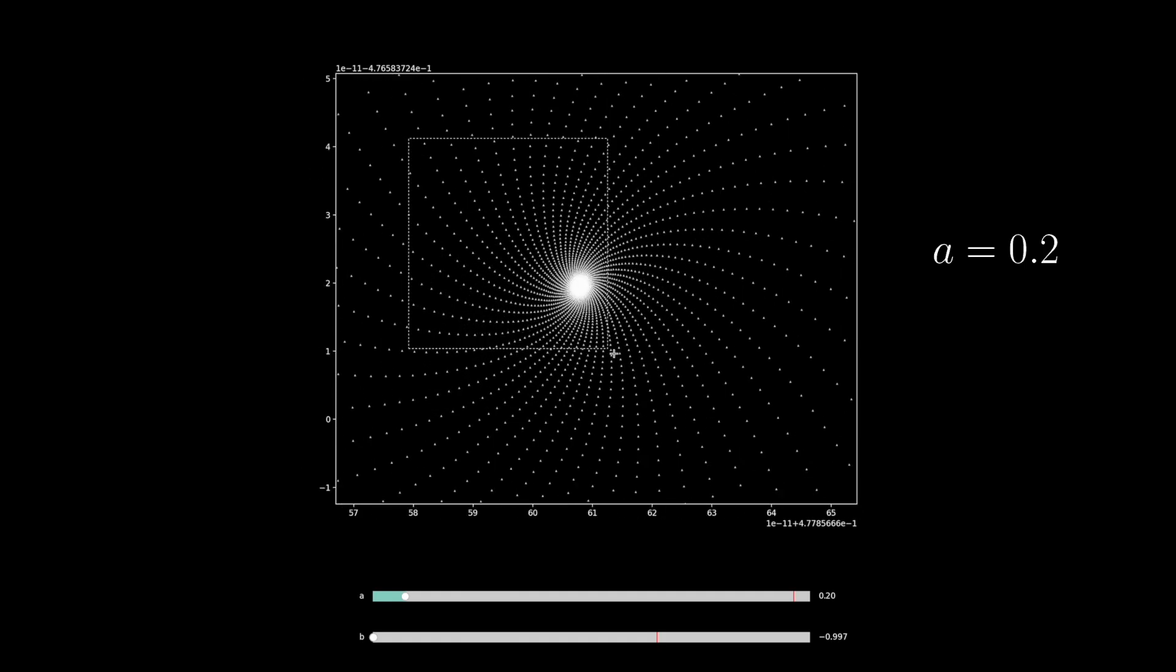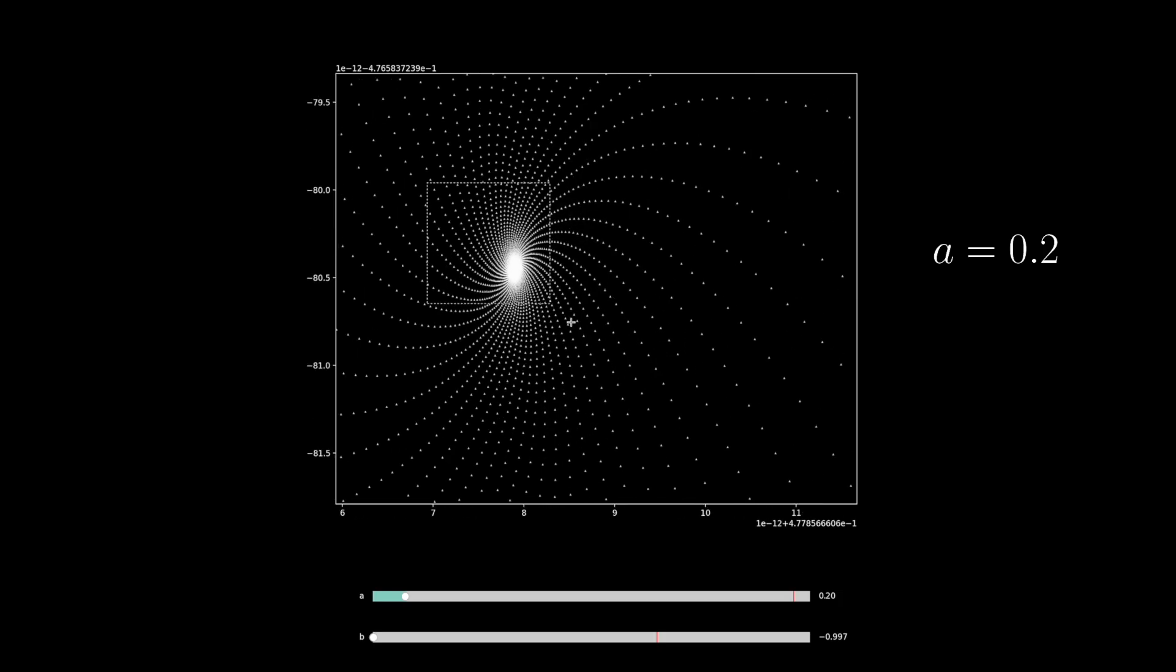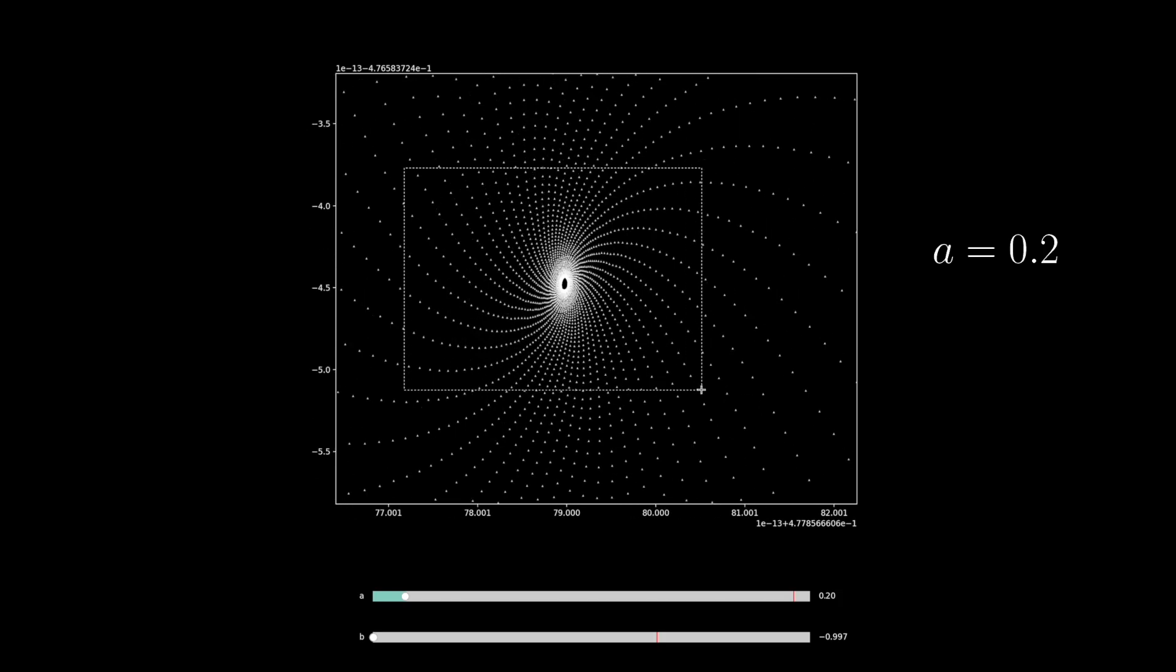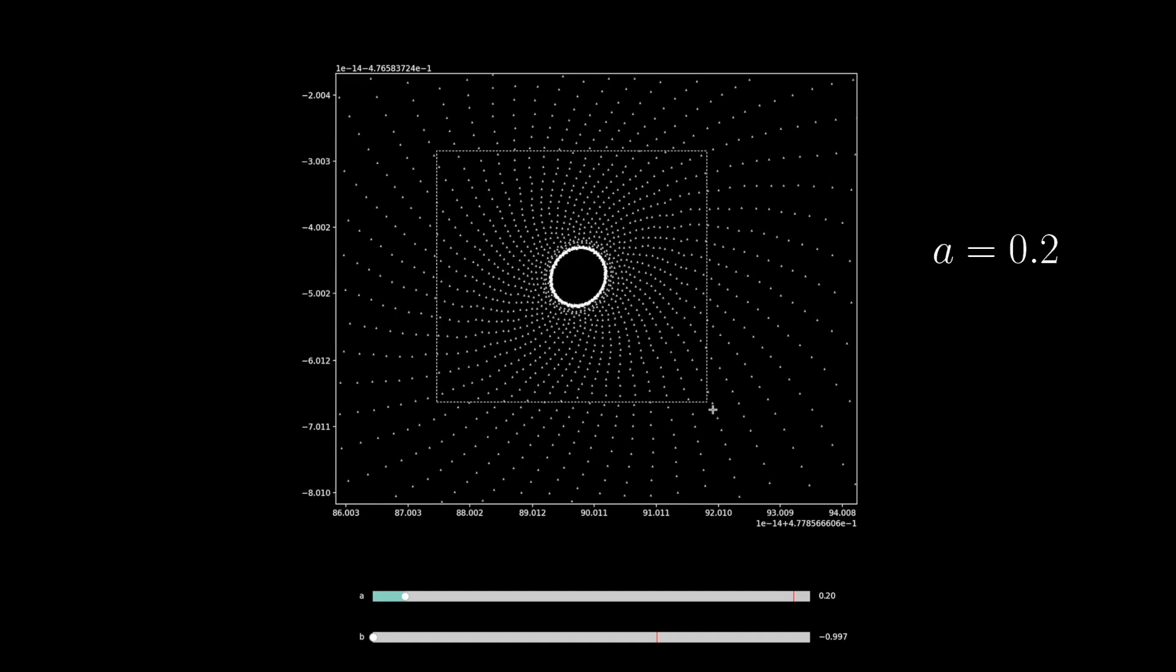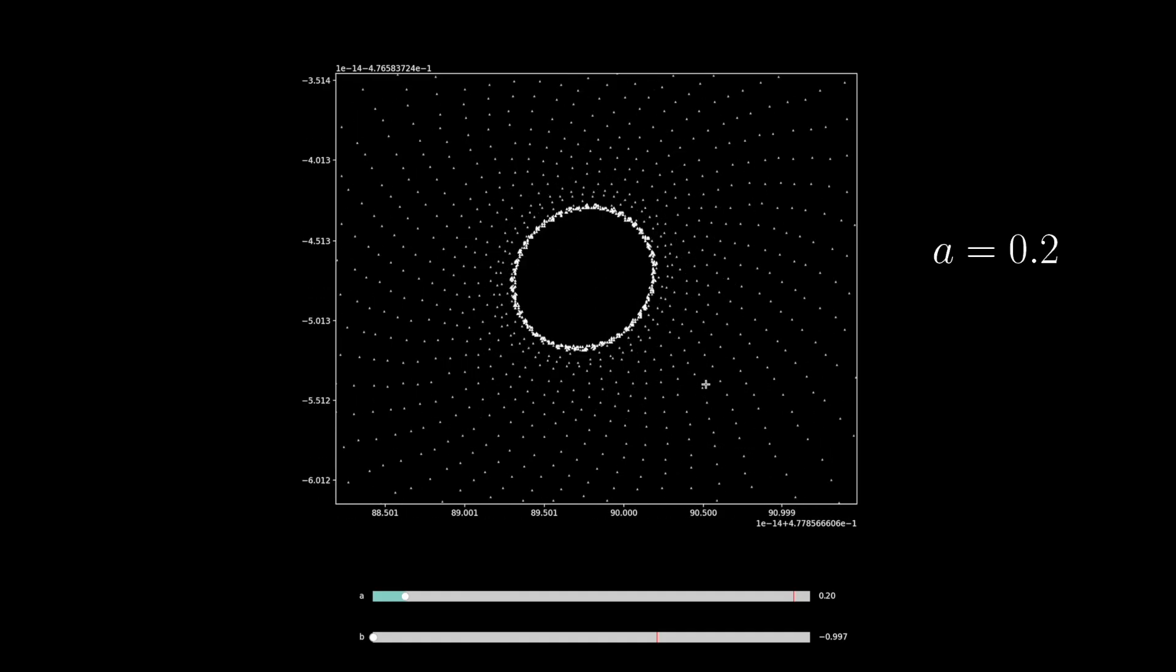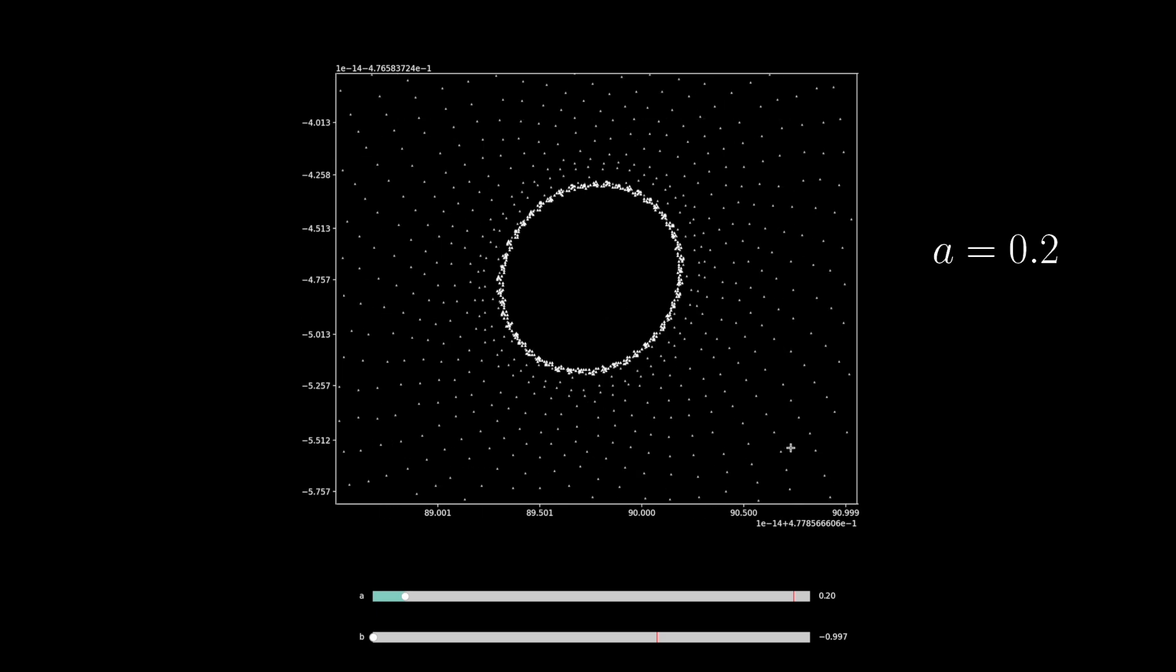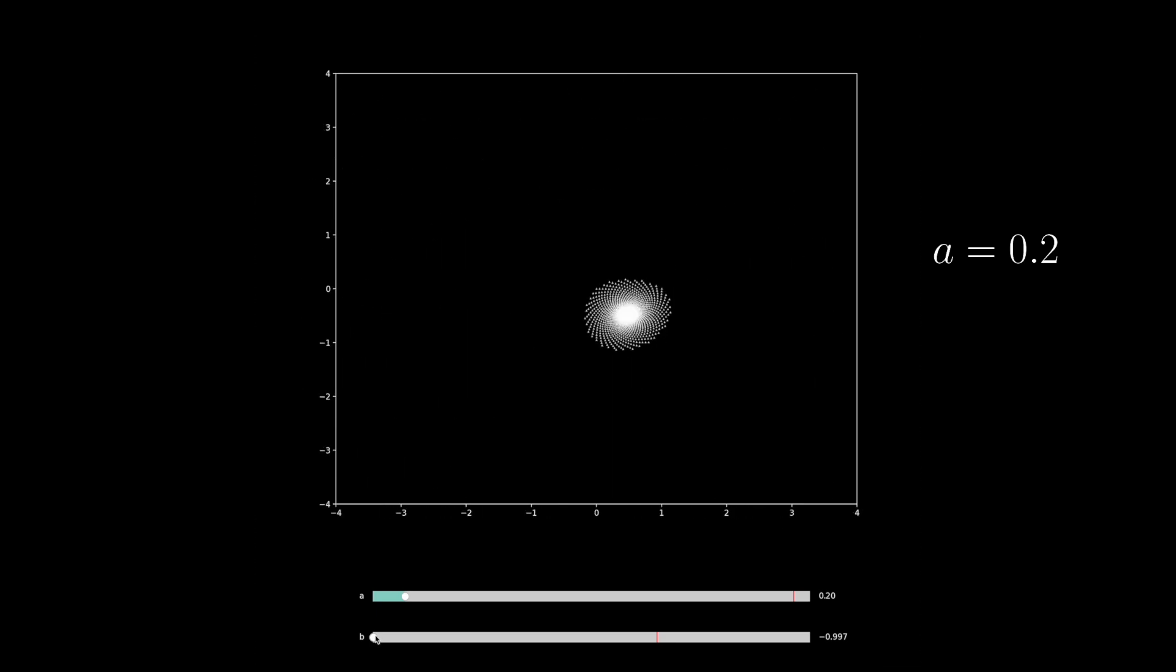Zoom in even deeper. And we can see this black hole emerging. Zoom in on that. You can see these bright points around the empty space. These are the points in a cycle attractor. Zoom back out.